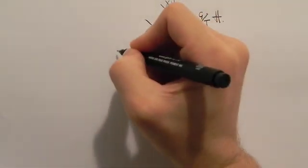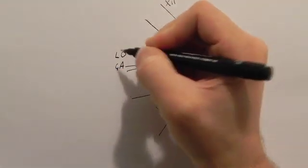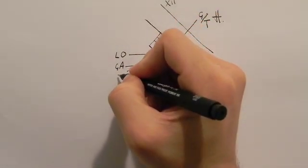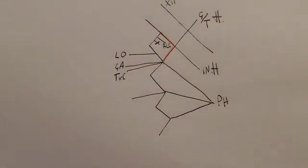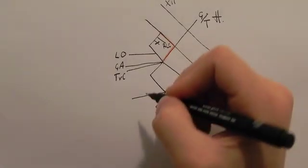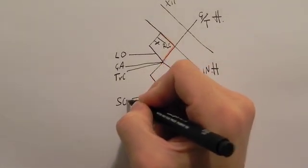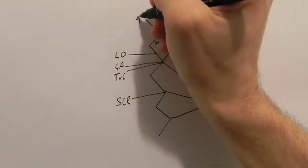We have the lesser occipital and greater auricular, and then we have the transverse cervical nerves, and then we have the supraclavicular nerves. We can just complete it.